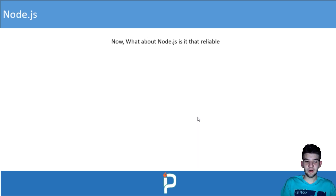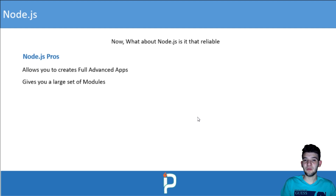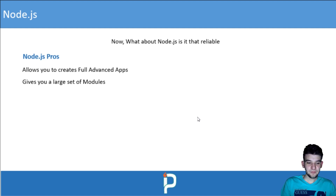Moving on to Node.js: it allows you to create full, advanced applications and gives you a large set of modules. If you're familiar with npm or Yarn — package managers — that's why people love Node.js so much. It gives you the flexibility to use code that other people have already created, so you don't need to recreate things from scratch. There's a large set of modules, including asynchronous modules, that can handle a lot for your application.